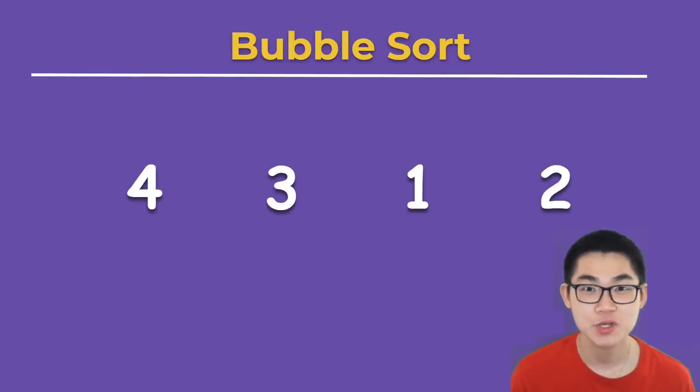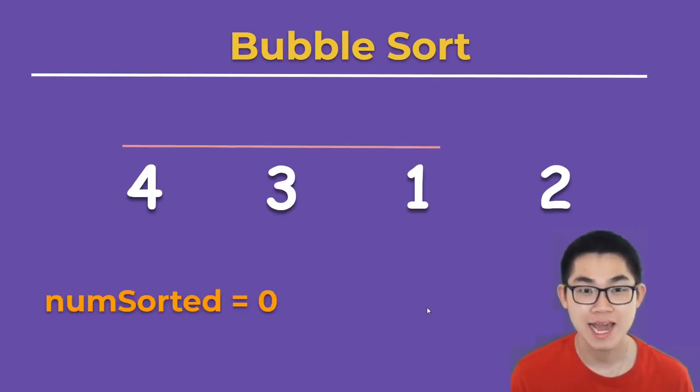In this video, I'm going to show you how to sort an array from least to greatest using bubble sort. The first step is to put a line on the first element to the second last element. We also have a variable called numSorted and you'll see what it does in a second.